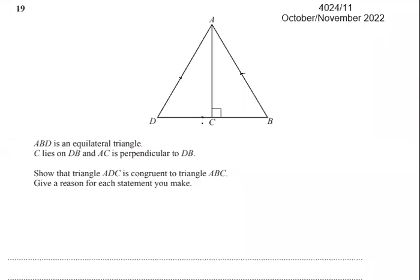Question 19, Paper 1, October November 2022. ABD is an equilateral triangle where the three sides are equal. C lies on BD, and AC is perpendicular to DB. Show that triangle ADC is congruent to triangle ABC. These two triangles are congruent, so we can say that...